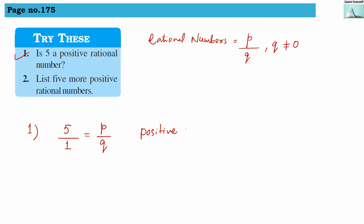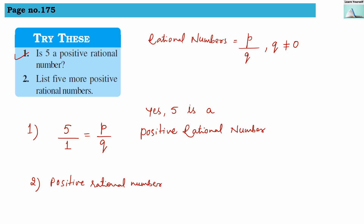The second question asks us to list 5 more positive rational numbers. We can write: 1 divided by 3, 7 divided by 4, 5 divided by 7, 3 divided by 2, and 7 divided by 9 — all positive and in rational number form. We can also write 6, since it is a whole number and can be written as 6 divided by 1, making it a rational number too.